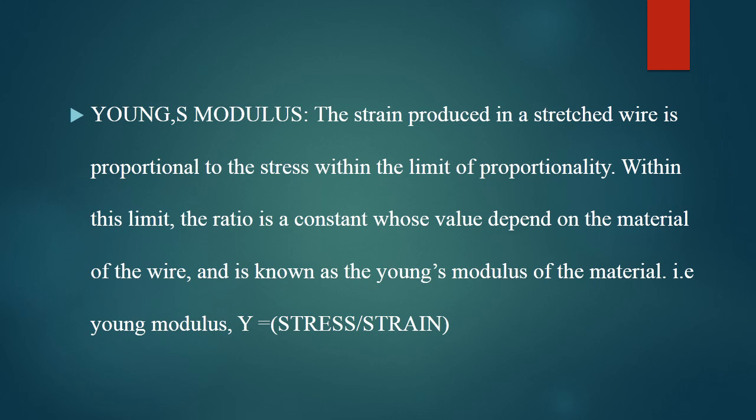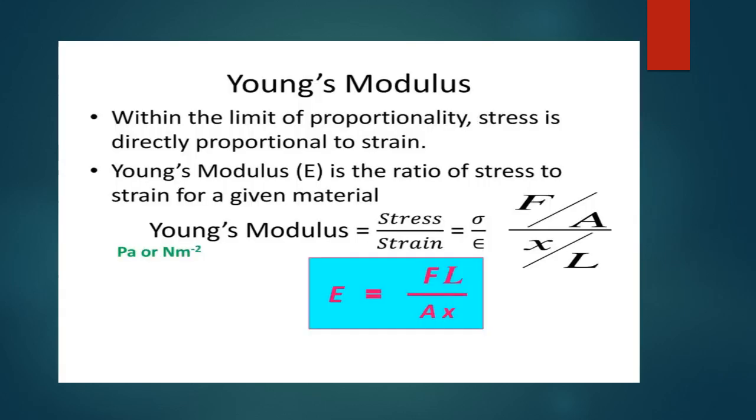Young's modulus — from these basic parameters we can understand Young's modulus for a particular material. When stress is proportional to strain within the limit of proportionality, the ratio is a constant which depends upon the material of the wire. From the values of stress and strain, we can find the Young's modulus of the particular material, which is the ratio between stress and strain.